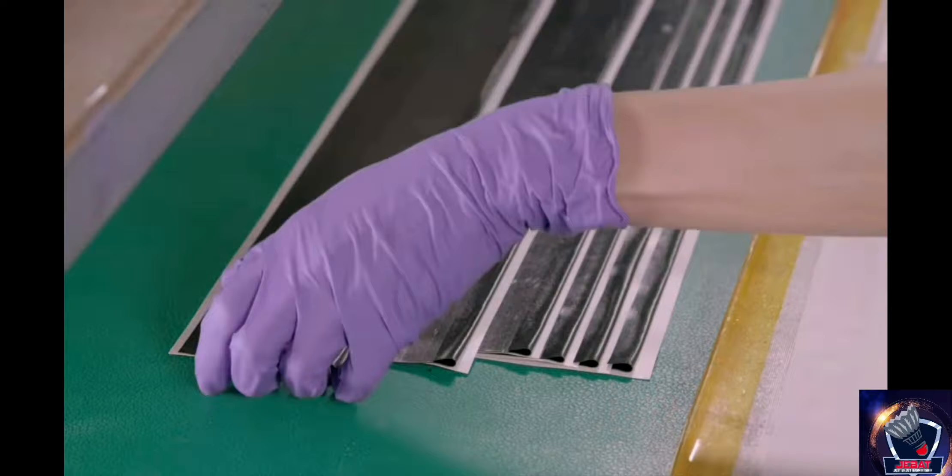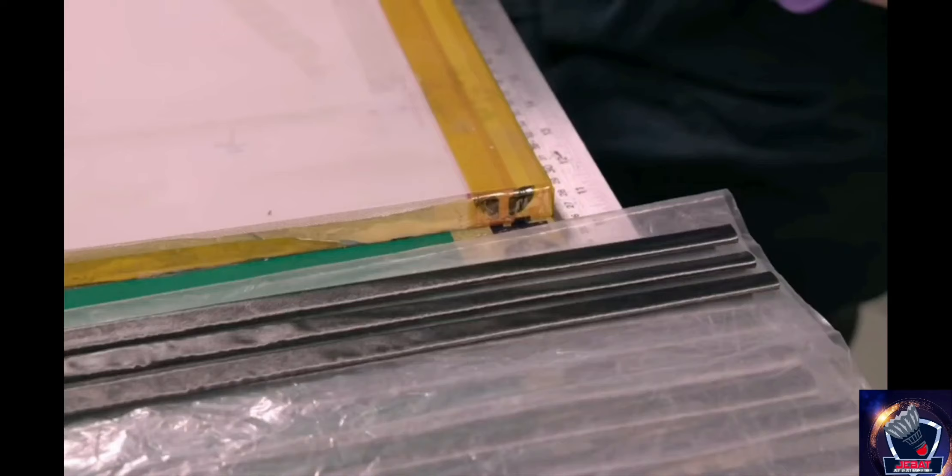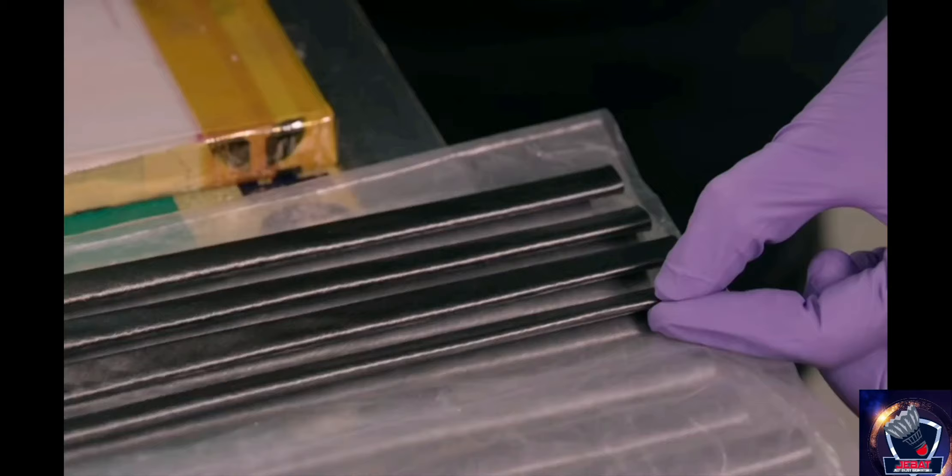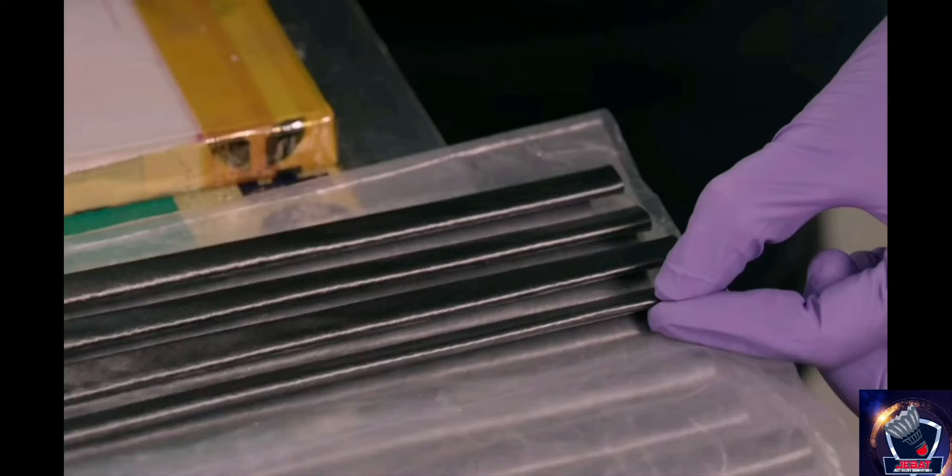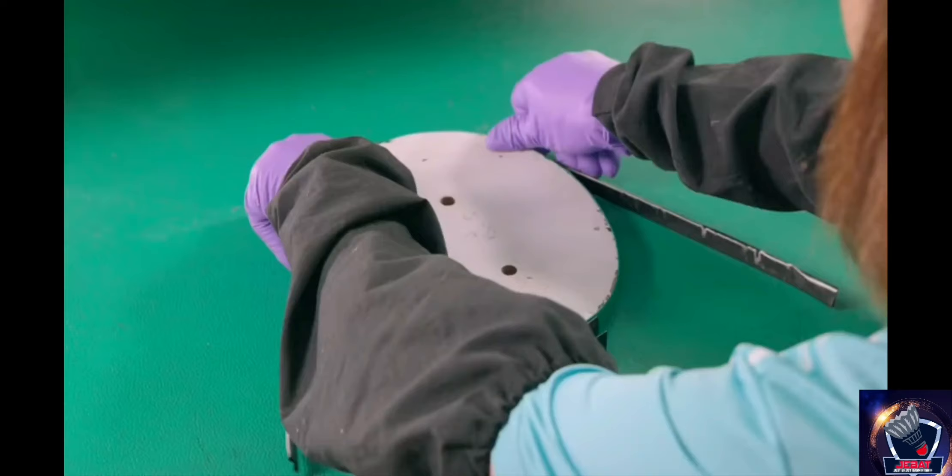In the next stage of production, a worker begins the process of manufacturing the racket frame. She starts with a different formulation of pre-preg material, which she folds into thin strips. The key is to make sure each strip is identical.